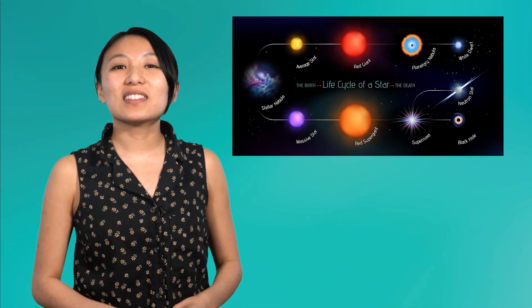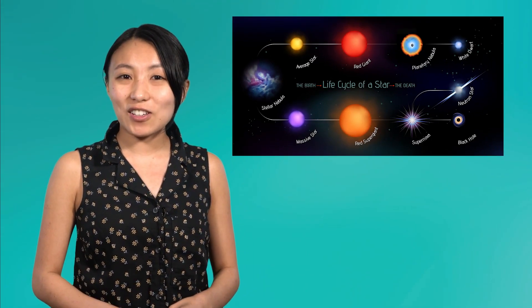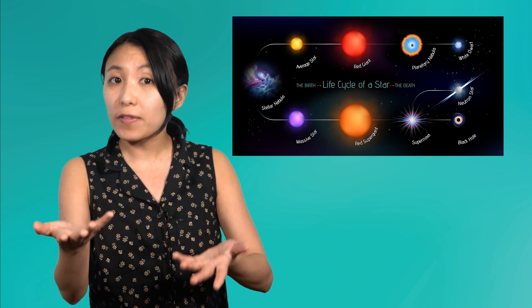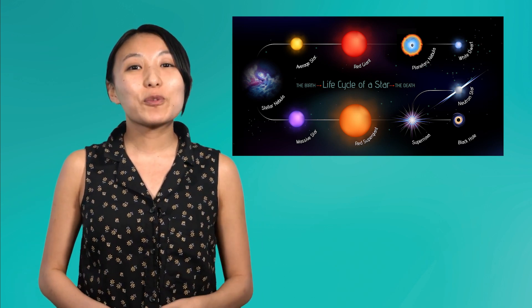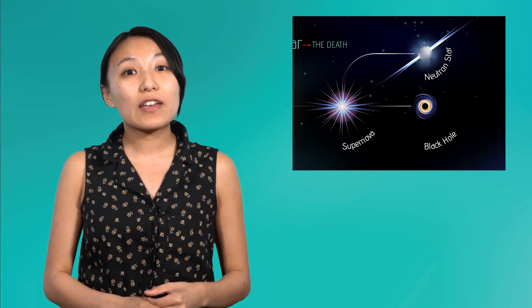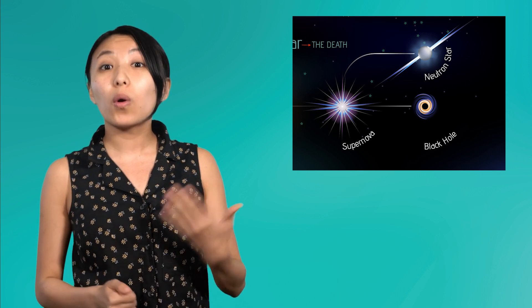This brings us to the last step in the life cycle of massive stars, where their possible path splits off again depending on their mass. Once a supernova occurs, the remains of the massive star can become either a neutron star or a black hole. Let's explore each one.